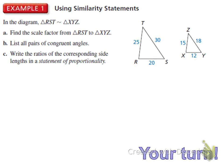What did we get for scale factor? Three-fifths. And then congruent angles: angle R is congruent to angle X, angle S is congruent to angle Y, angle T is congruent to angle Z. I'm going to walk around and check your statement of proportionality since you could all have very different answers.